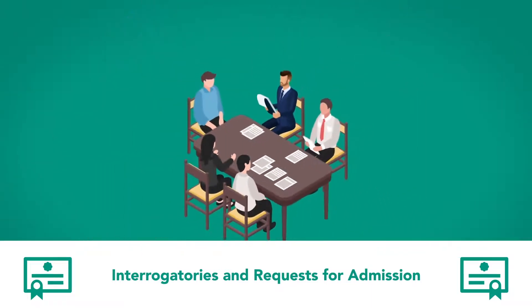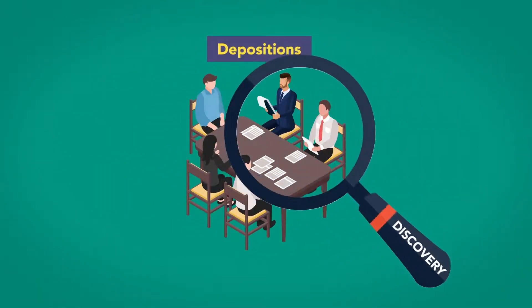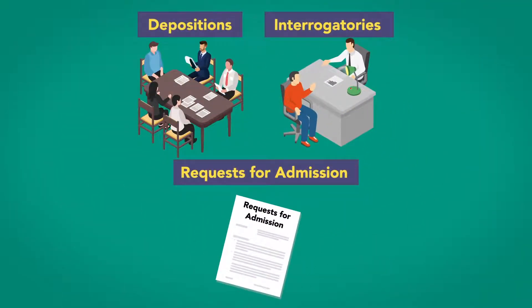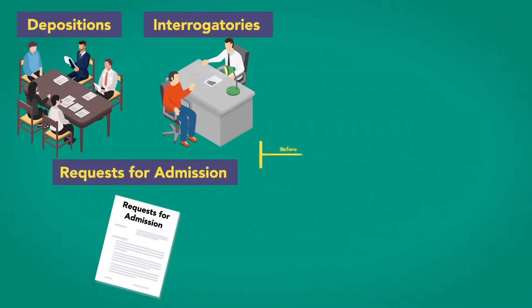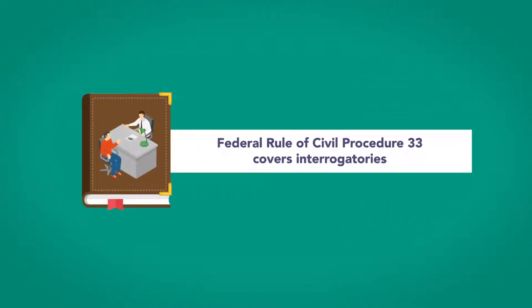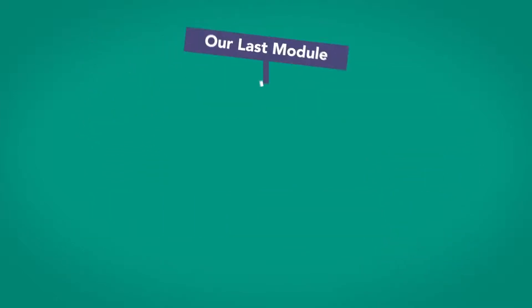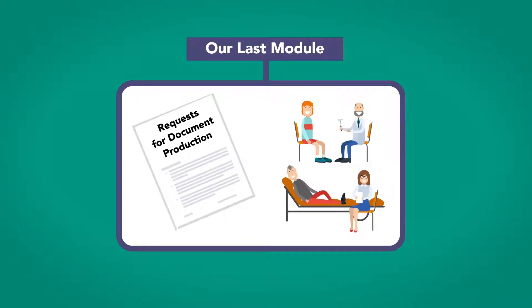While used ubiquitously, depositions are not the only means of discovery. Interrogatories and Requests for Admission are additional tools that parties can use to discover information before trial. Federal Rule of Civil Procedure 33 covers interrogatories and Rule 36 covers Requests for Admission. Our last module will cover Requests for Document Production and Physical and Mental Examinations.